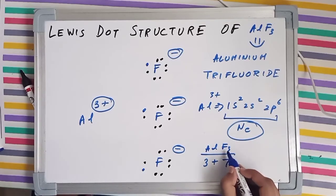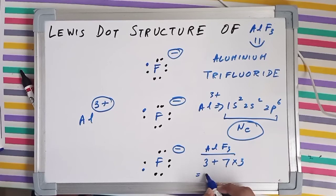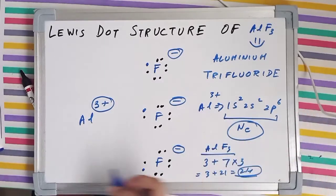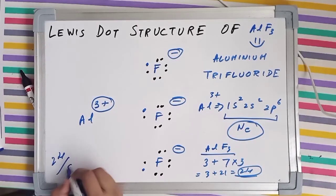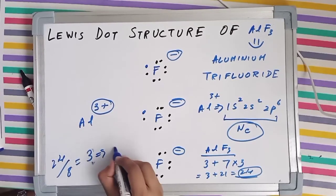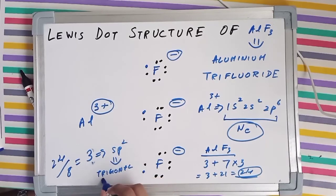So aluminum had 3 valence electrons whereas fluorine had 7 valence electrons. But since we have 3 atoms of fluorine F3, we are going to multiply this 7 by 3. So 3 plus 21 gives us 24. Now this value 24 is greater than 8, so we are going to divide 24 by 8 which gives us 3, which corresponds to SP2, which means it will be trigonal planar hybridization.